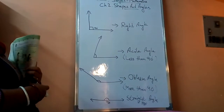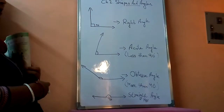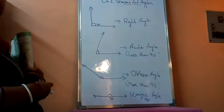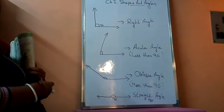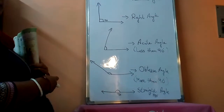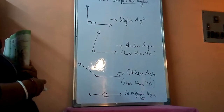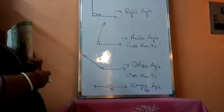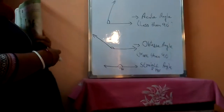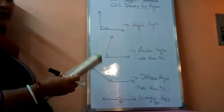Right angle — its measurement is 90 degrees. Acute angle — it is less than 90 degrees, that means all angles whose measurements are less than 90 degrees. Obtuse angle — measurement is more than 90 degrees. And straight angle is fixed at 180 degrees. These are the angles you will read in this chapter.